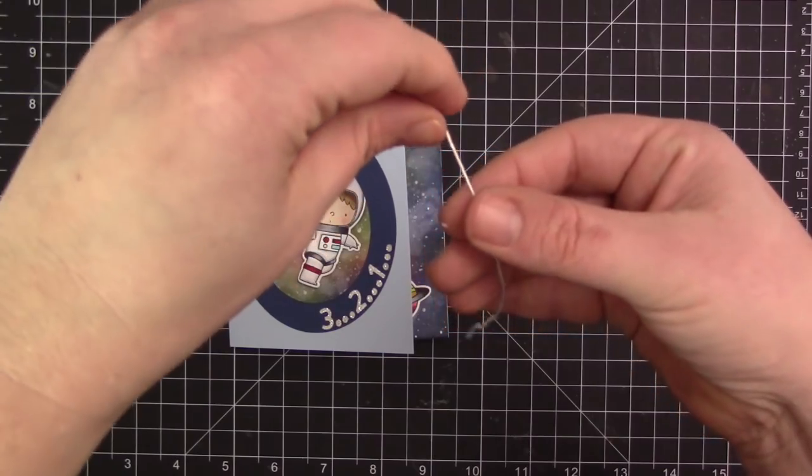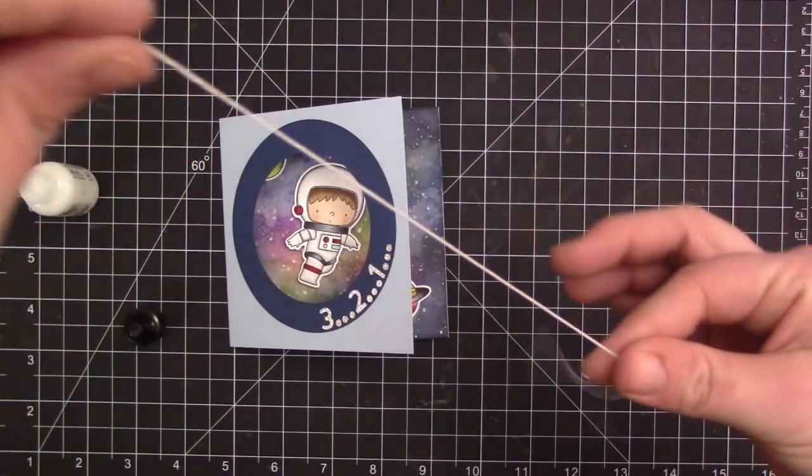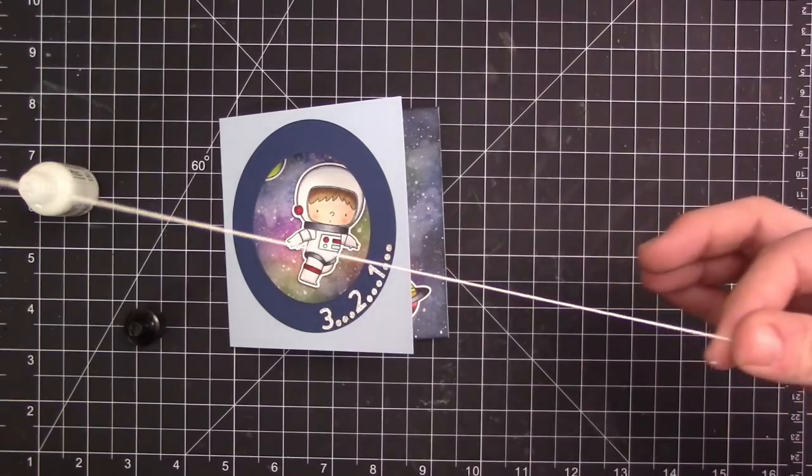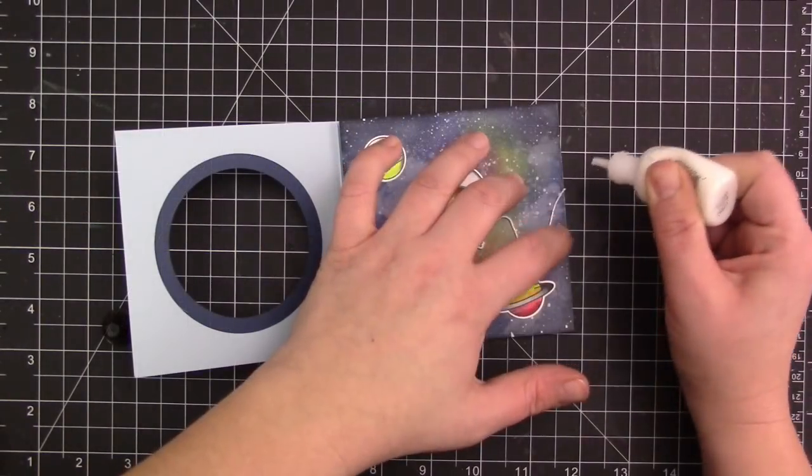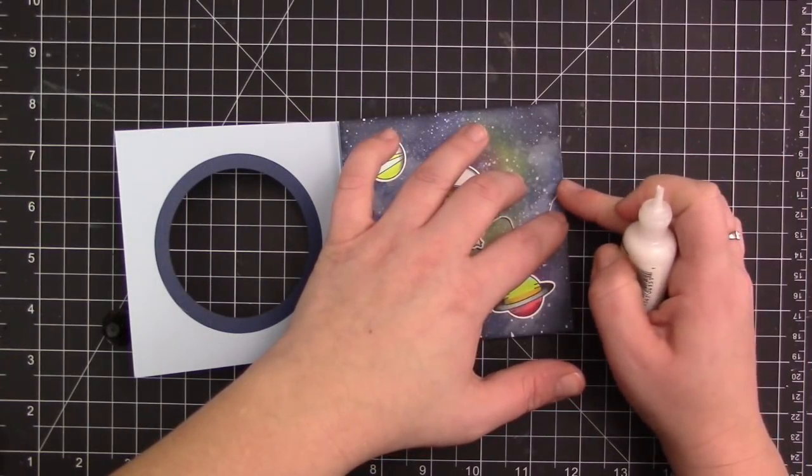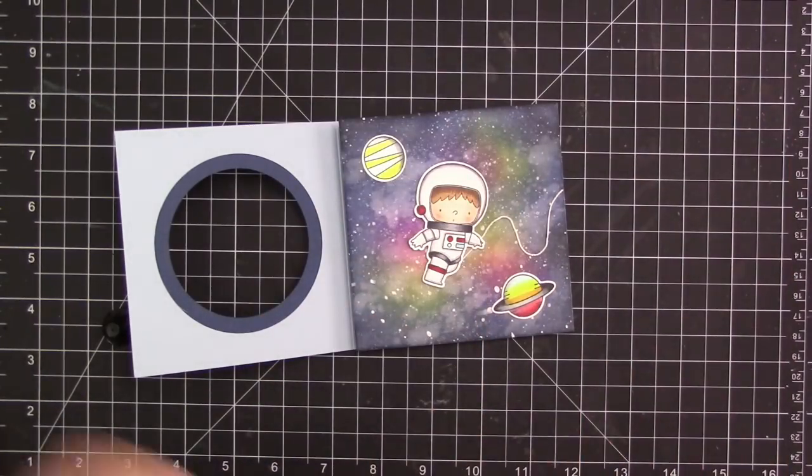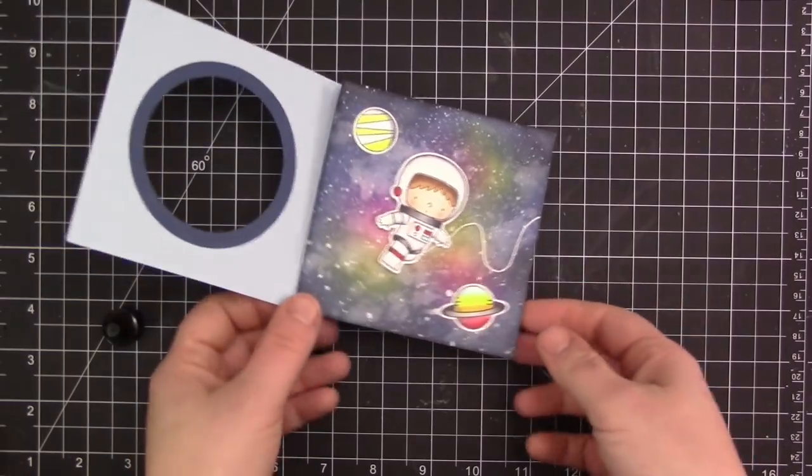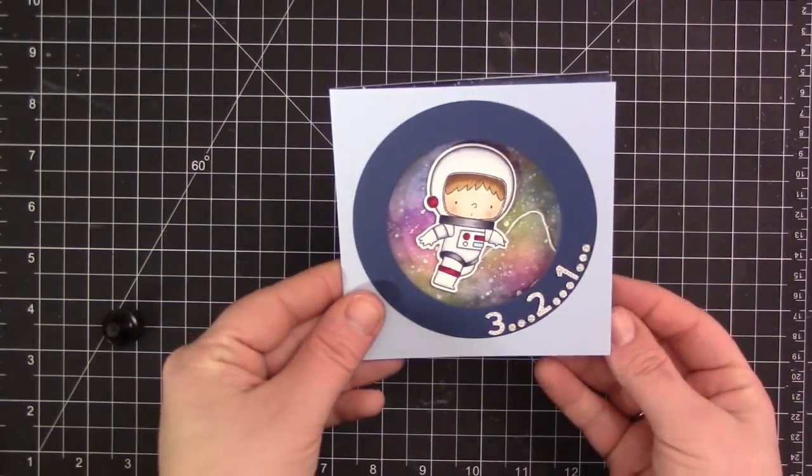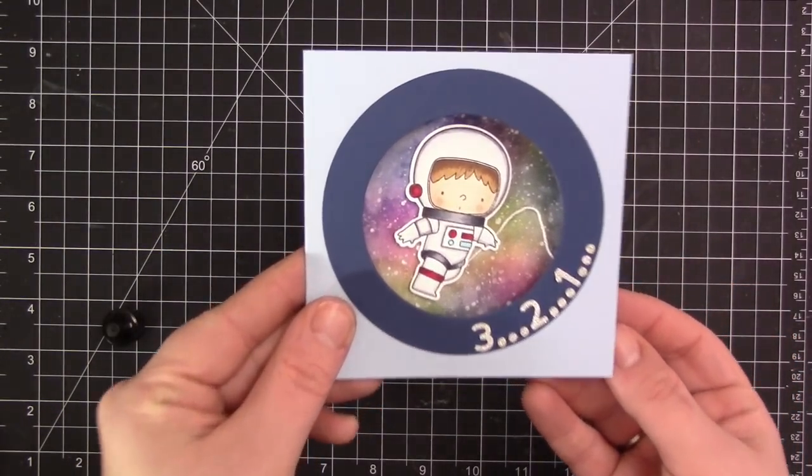And the way that I like to do this is I like to take matte multi-medium and I like to put it right on my fingers and then run the string right through the medium in between my thumb and my finger. And that just completely coats the string with the matte multi-medium. And then that's going to allow me to kind of maneuver this string and kind of give it this fun loopy look. And it's going to help to adhere it to the card. And then that is going to finish the card.